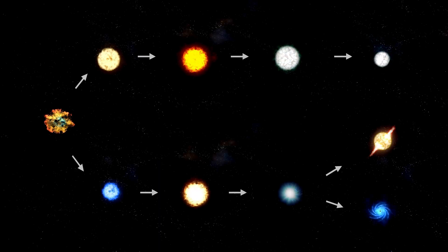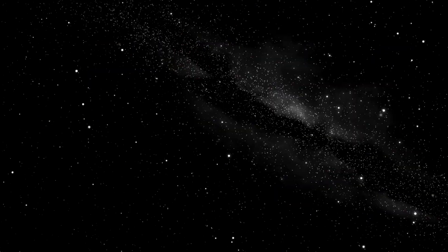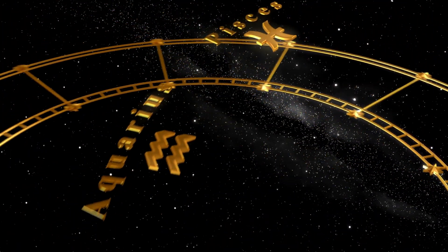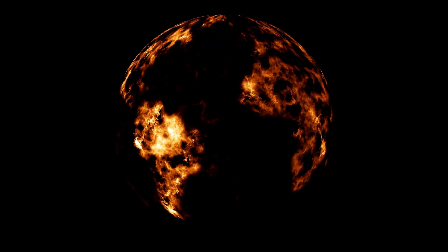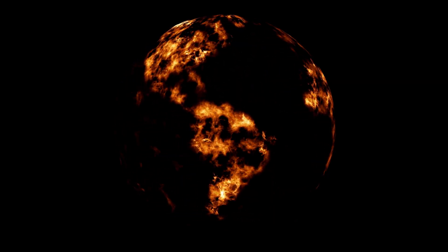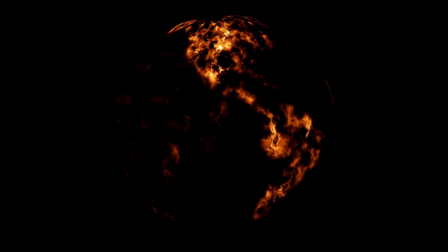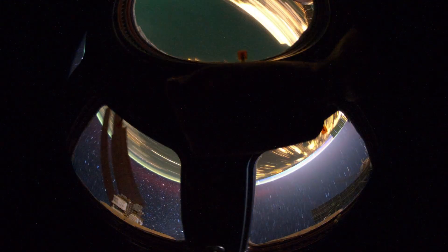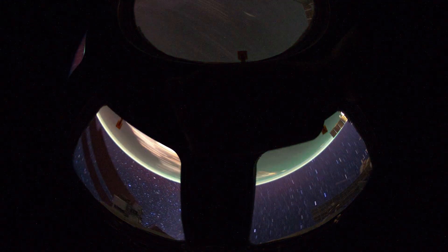The most significant is tidal locking. This means that one side of Proxima b is always facing its star, while the other side is in permanent darkness. Imagine living on a planet where half is scorching hot and the other half is freezing cold. These extreme temperature differences could make it harder for life to survive.